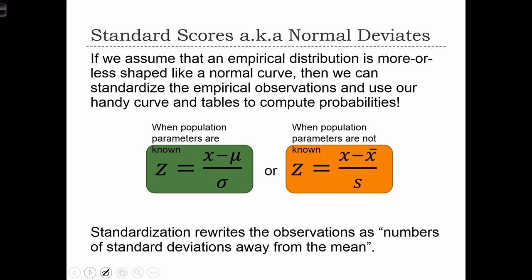In order to solve these problems in a more general sense, we're going to introduce the notion of standard scores or Z-scores, known as normal deviates. If we can assume that an empirical distribution is more or less shaped like a normal curve, then we can transform empirical observations or values from the empirical distribution and standardize them into a normal distribution that we know all of our probabilities for.